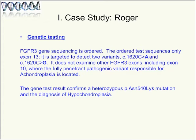A genetic test is ordered: FGFR3, the fibroblast growth factor receptor number three. Gene sequencing is ordered, but the test sequences only one specific exon and is targeted to detect two variants, C1620C to A and C1620C to G. It does not examine other FGFR3 exons, including exon 10, where the fully penetrant pathogenic variant responsible for achondroplasia is located. The gene test result confirms a heterozygous mutation or variant, p.Asparagine 540 Lysine, and the diagnosis of hypochondroplasia is made.